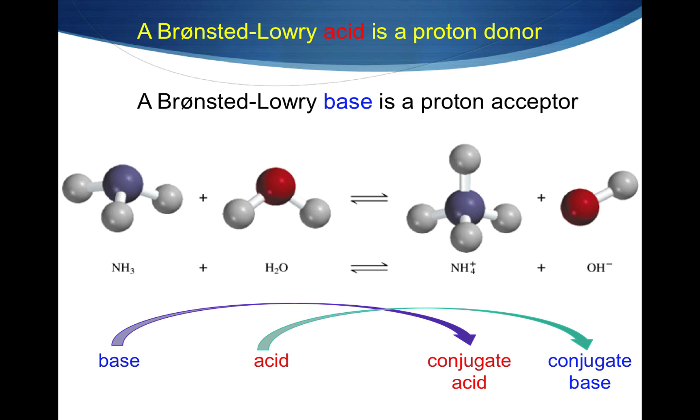A Bronsted-Lowry acid is a proton donor. A Bronsted-Lowry base is a proton acceptor. Take a look at this example. The base, ammonia, changes into the ammonium ion. That means the ammonia has gained a hydrogen and become the ammonium ion. They are a conjugate acid-base pair. The water has lost a hydrogen to become the hydroxide ion. That means that water and the hydroxide ion are also a conjugate acid-base pair.